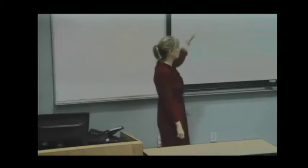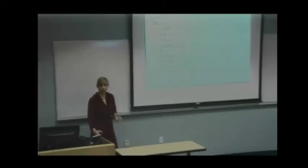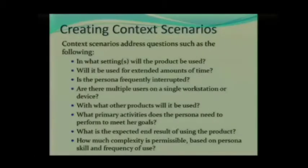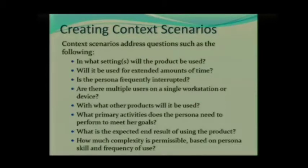What other products will be used — either in conjunction with this product, because now rarely do we use just one product, or on the same system? How will they be used together? What primary activities does the persona need to perform to meet his or her goals? What is the expected end result of the product, and how much complexity is permissible based on persona skill and frequency of use? We have a tendency to make things too complex.